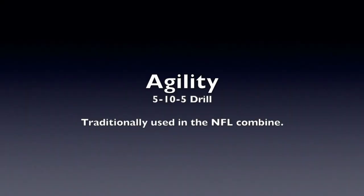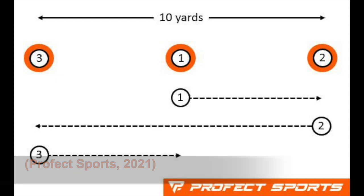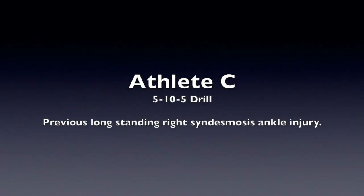Next we will look at the 5-10-5 agility drill. This involves performing a 5-metre shuttle into a 10-metre shuttle back across the baseline and then a final 5-metre back to the baseline. Next is Athlete C performing the 5-10-5 agility drill.